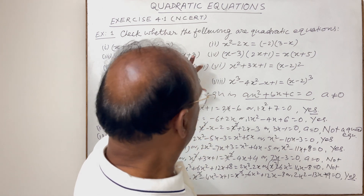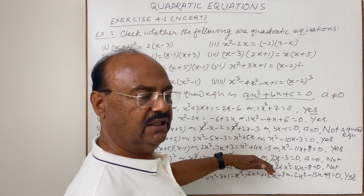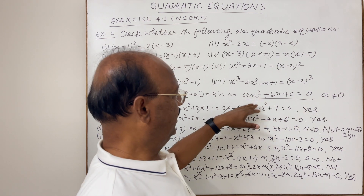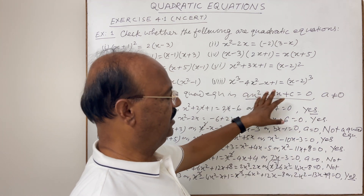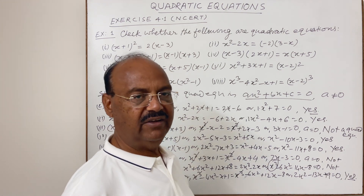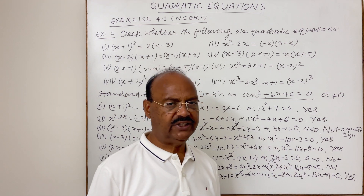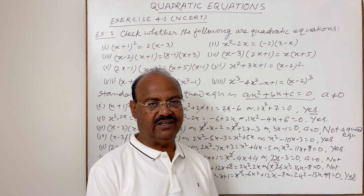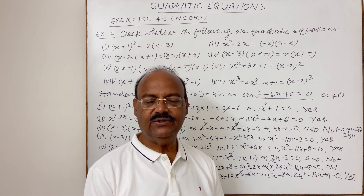So expressions or equations given in different forms can be simplified and compared with the standard form ax² + bx + c = 0 to decide whether they are quadratic or not. This is a very important chapter for board examinations. Please remain in touch with these videos, share them with your friends, and thank you very much for watching. All the best!